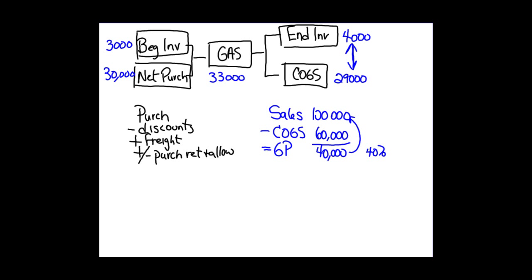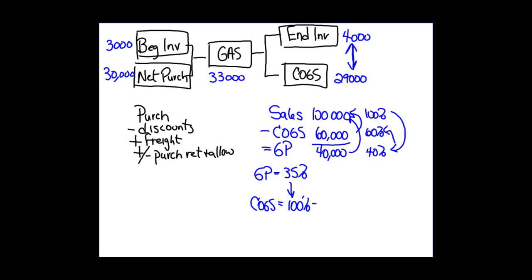We can turn those into percentages. Gross profit percentage is gross profit divided by sales — in this case 40%. Cost of goods sold percentage is $60,000 divided by sales, which is 60%. Alternatively, if gross profit is 35%, we can calculate cost of goods sold percentage by taking 100% minus 35%, which gives us 65%. That means 65% of your sales represents the cost of the goods sold to customers.